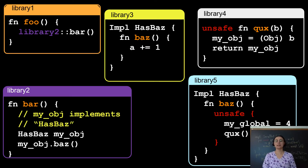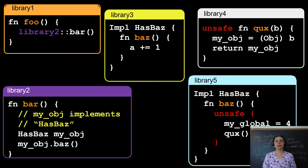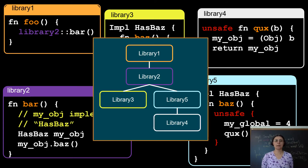This is an example that will help us understand the difficulties of tracing unsafe code. Library1 calls function bar of Library2. In Library2, we have an object that implements the hasBuzz interface, and it could be either from Library3, which is perfectly safe, or Library5, which is potentially unsafe because the buzz implementation contains an unsafe block. The library dependencies are as follows: Library1 depends on Library2, which depends on Libraries 3 and 5, and Library5 in turn depends on Library4.